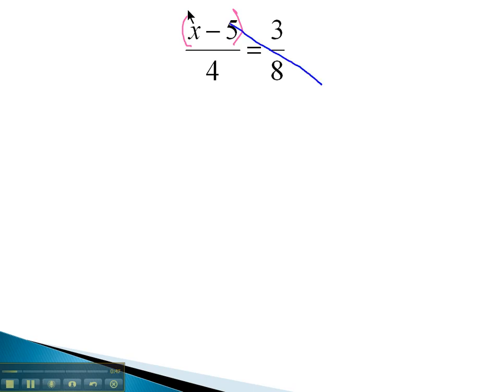That way, when we multiply the diagonal, we get 8 times in parentheses x minus 5, and the other diagonal 4 times 3 is 12, and we know those will be equal.